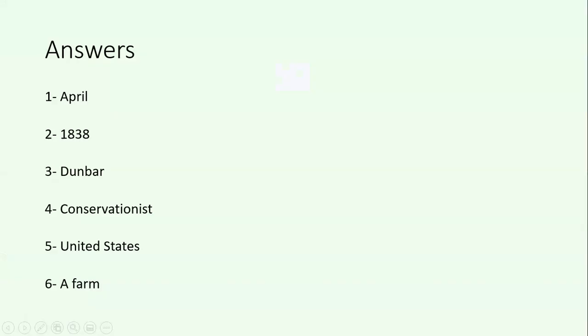Here are your answers. Number one is April. Number two is 1838. Number three is Dunbar. Number four is a conservationist. Number five is the United States, and number six is a farm. Check and change your answers. Now we're going to watch a video on the story of John Muir.